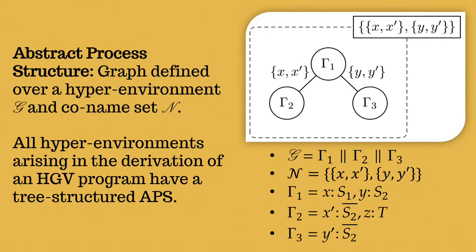The idea is that typing environments are nodes and pairs of endpoints are edges. So as an example, consider the hyper-environment G on the right, which consists of three typing environments. Γ₁ contains X and Y, Γ₂ contains X' and Z, and Γ₃ contains Y'. So if we know that X and X' as well as Y and Y' are co-names, then we can construct the graph in the top right. So you'll also notice that the graph in the top right is a tree. So the typing end rules ensure that every hyper-environment arising in the derivation of an HGV program is tree-structured.